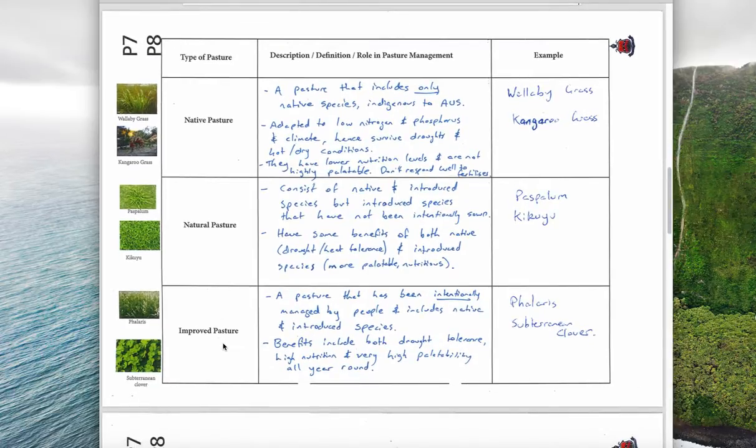The last type of pasture is an improved pasture where a human has actually intentionally managed the pasture and has put various species of pasture into that pasture.